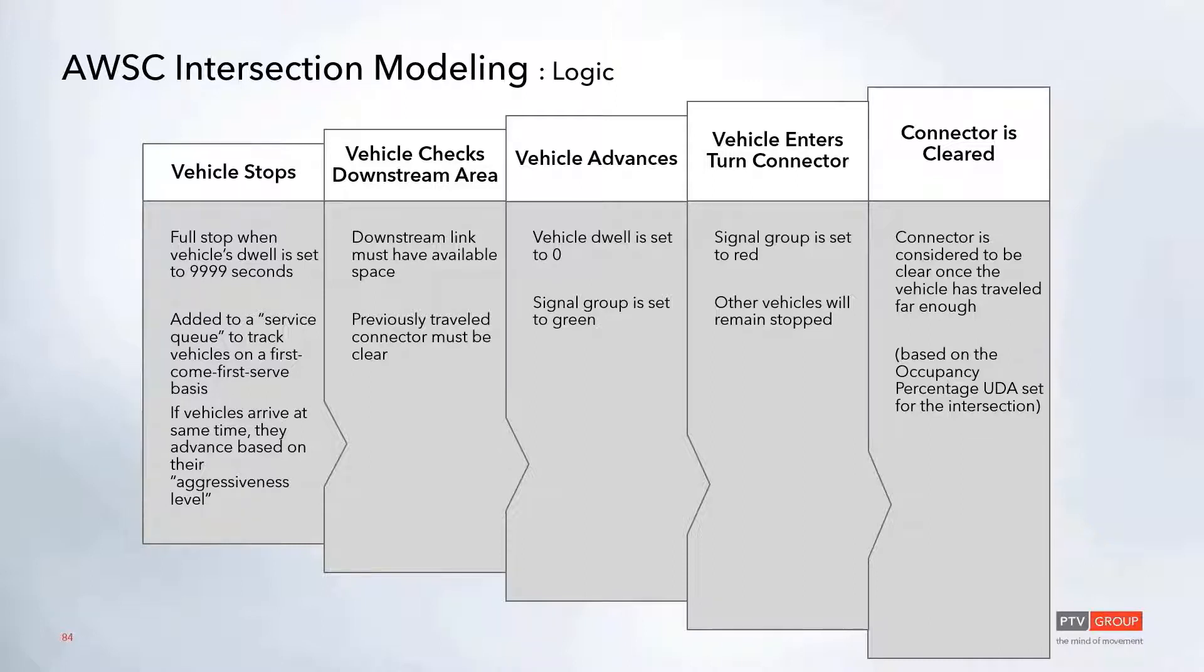Once both of those conditions have been met, the vehicle will advance. So we'll set the dwell time to zero and turn that signal group green. And then as soon as the vehicle enters its turn connector, that signal group will be set back to red, and all of the other vehicles will just remain stopped.